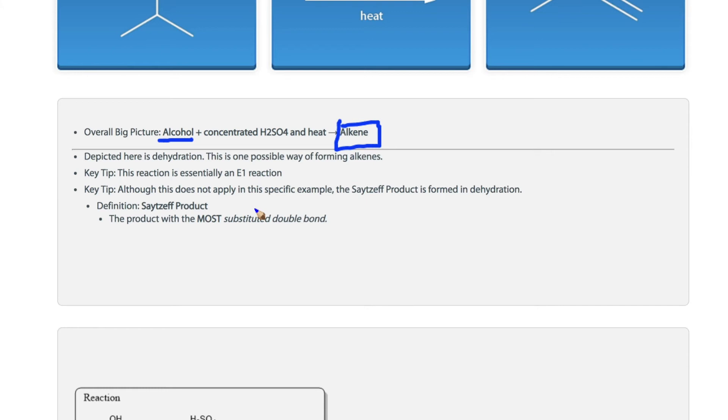The mechanism involves elimination of water via an E1 reaction mechanism. Remember that carbocation stability will determine the major product.